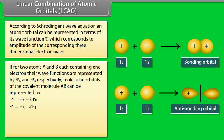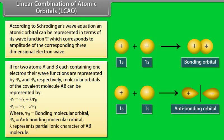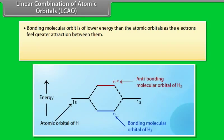Where ψB equals the bonding molecular orbital and ψA equals the anti-bonding molecular orbital. Lambda represents the partial ionic character of the AB molecule. The bonding molecular orbital is of lower energy than the atomic orbitals as the electrons feel less attraction between them.